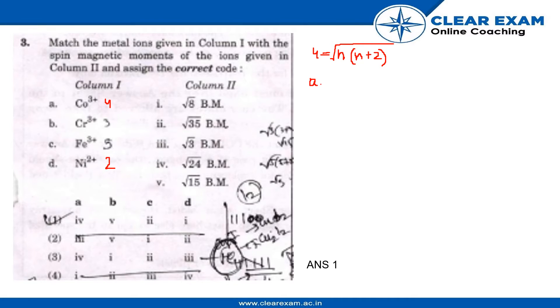Let's put the value in the formula: 4 times (4 plus 2). The magnetic moment will be 4 into 6, which is 24, so under root 24. The option for 24 is here, so the magnetic moment of A is 4.